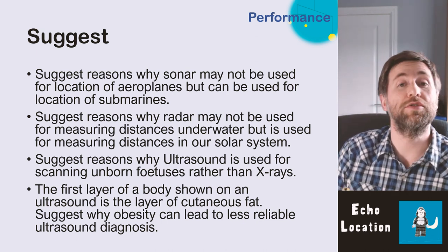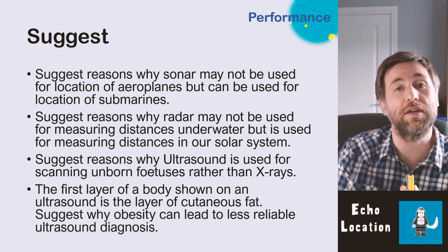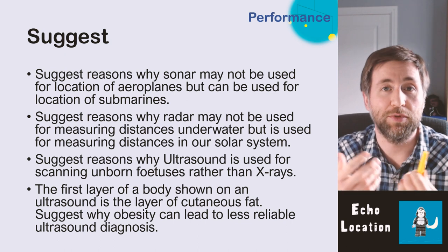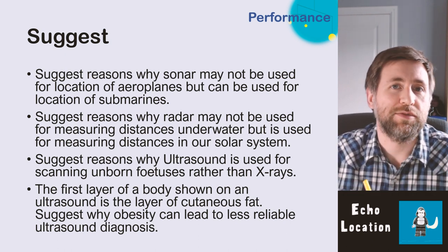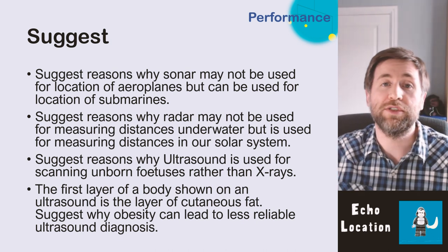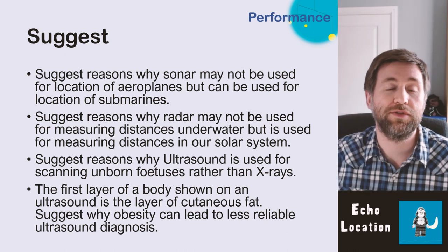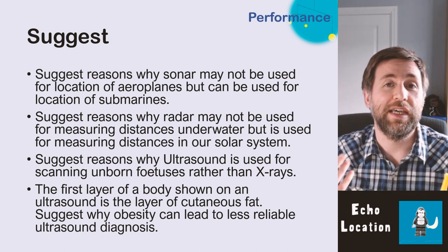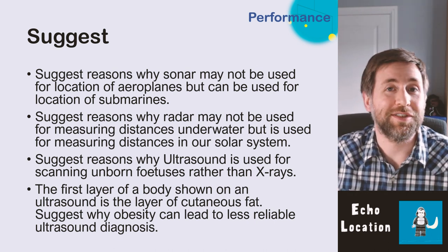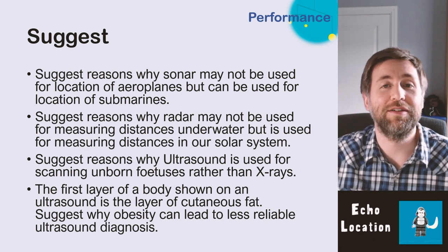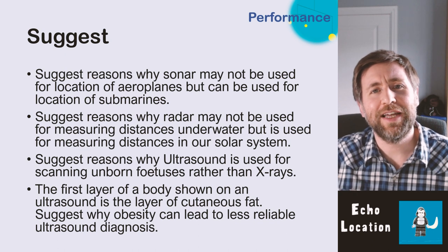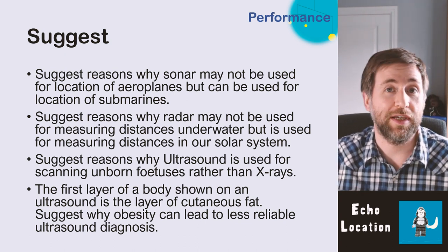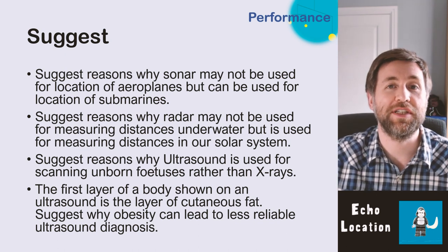Reasons why ultrasound is used for scanning unborn fetuses rather than X-rays: first, ultrasound is non-ionizing — X-rays are ionizing radiation, which could cause DNA mutation, leading to cancer; in a rapidly dividing fetus, this risk is much greater than in an adult. Second, ultrasound gives moving images, and Doppler shift can analyze the rate of blood flow. Also, obesity can reduce ultrasound reliability because the thick fat layer absorbs too much of the wave before it reaches the fetus.